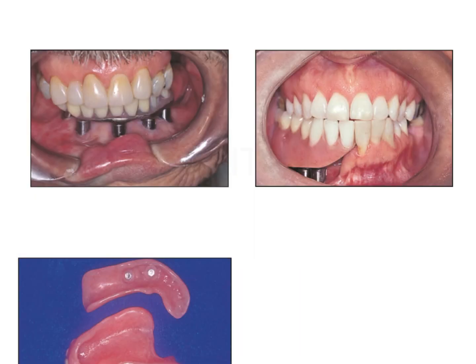A similar defect can also be treated with dental implants of various types, offering different connection possibilities. Here you can see a bar running on the implants to support the restoration; in another example, it is directly attached to the implants with a locator attachment. These implants are placed in non-native bone - the mandible reconstructed with a fibular graft or synthetic grafts - and then implants are placed to support the restoration on top.